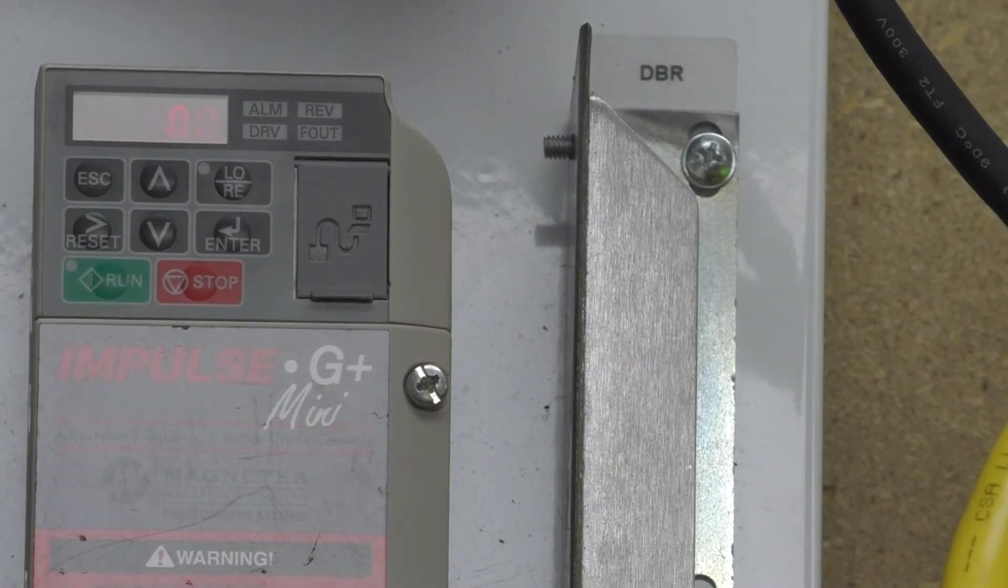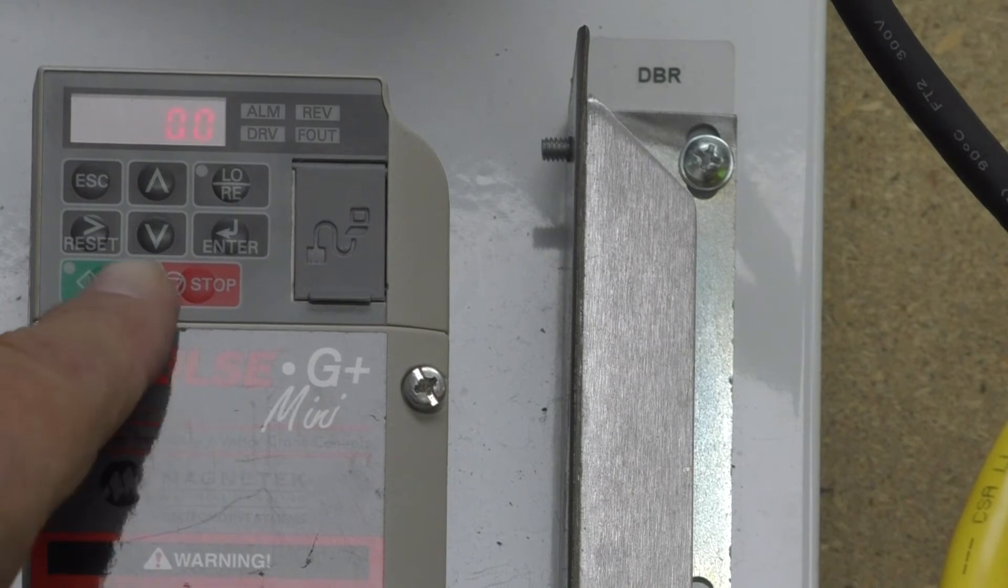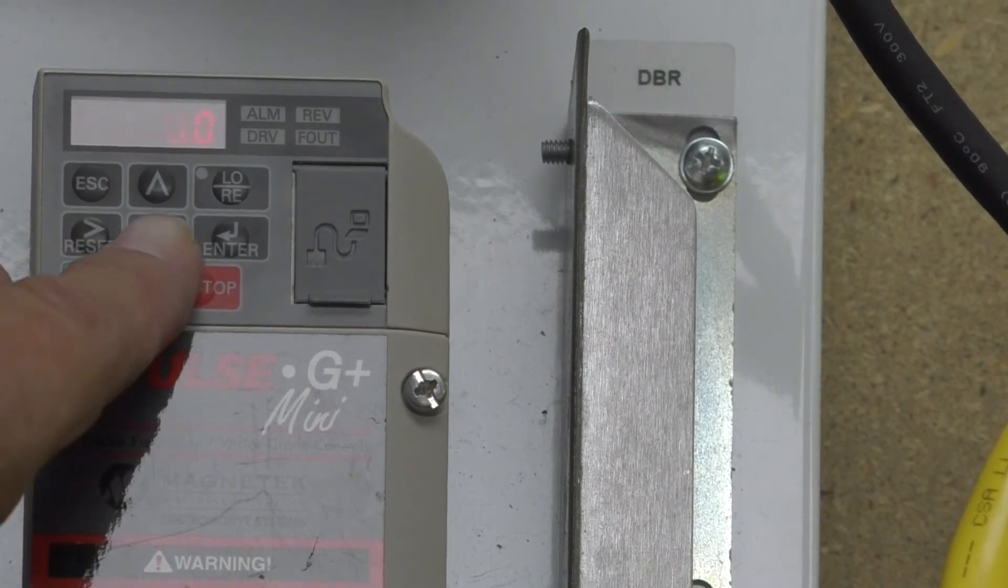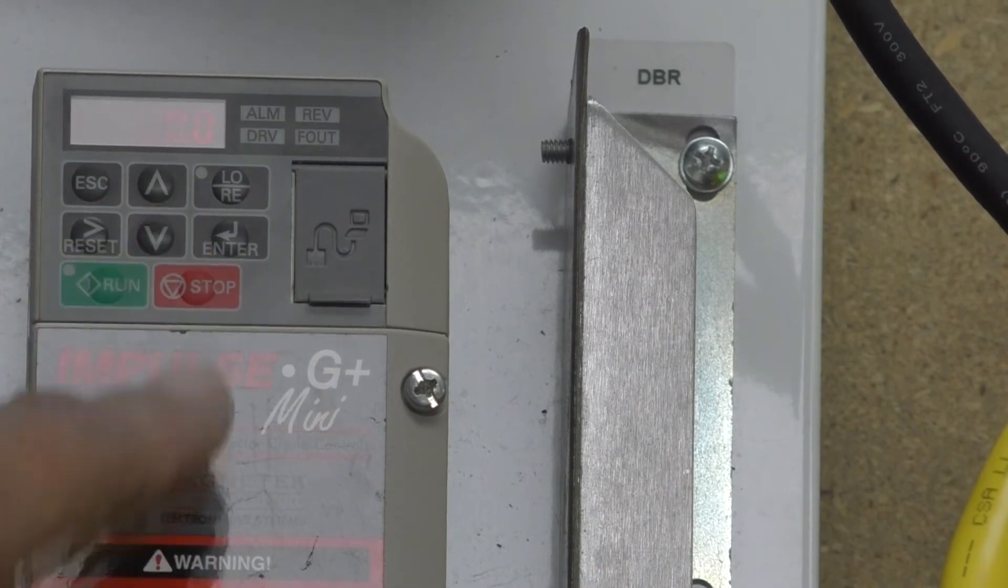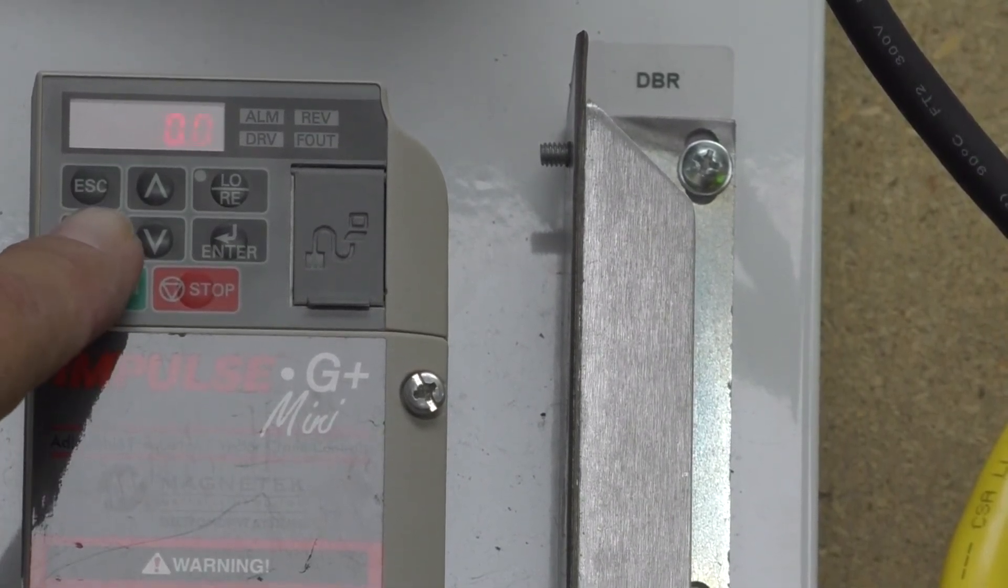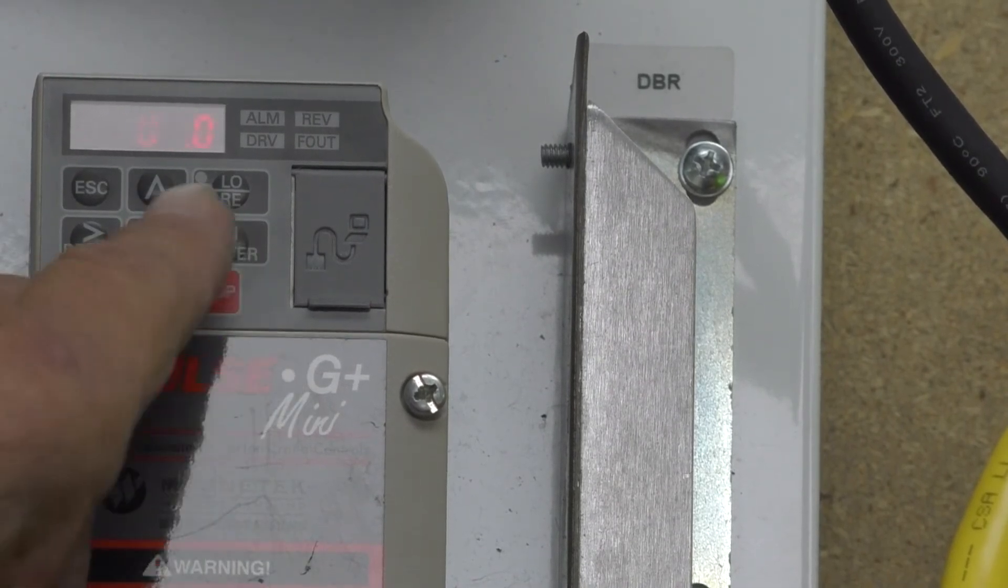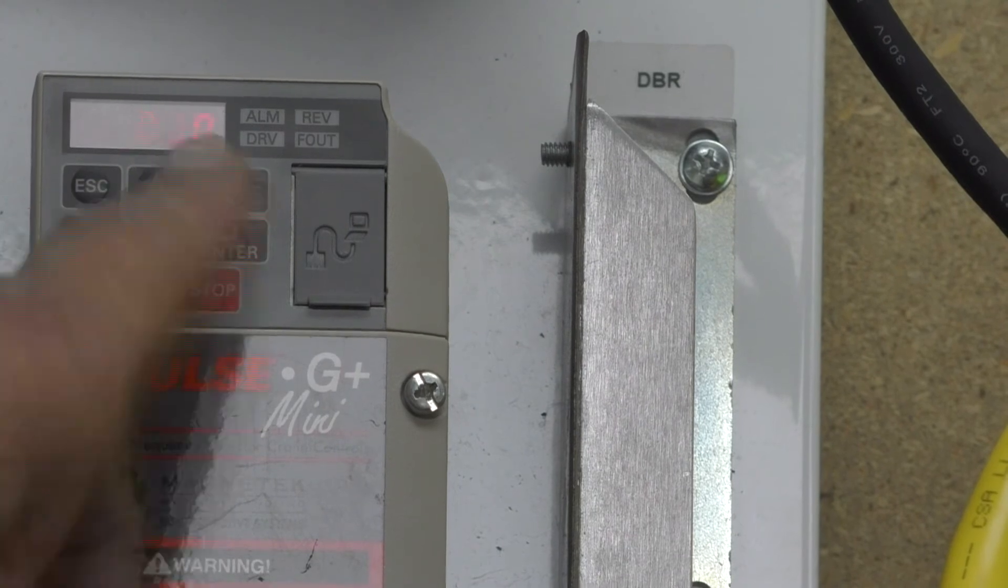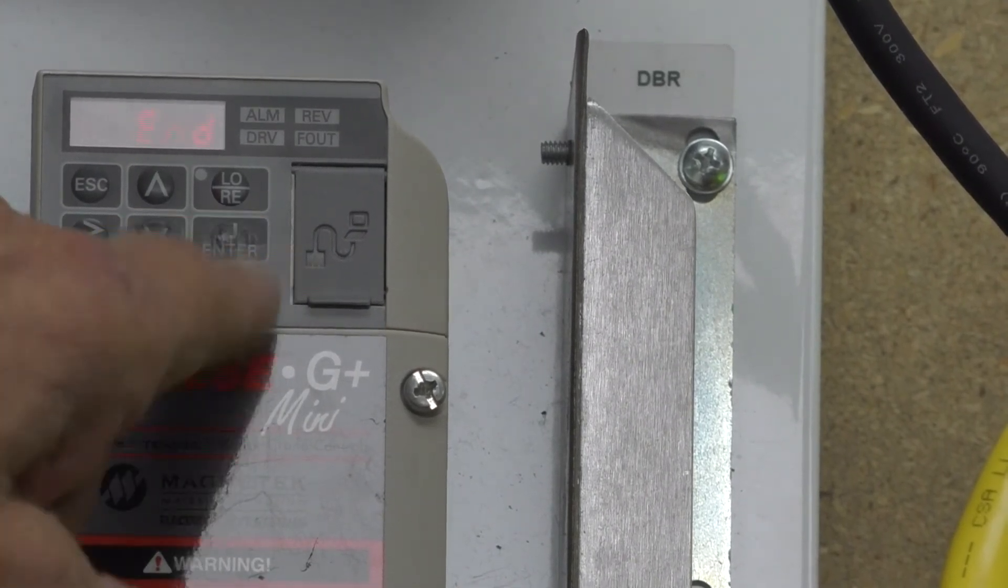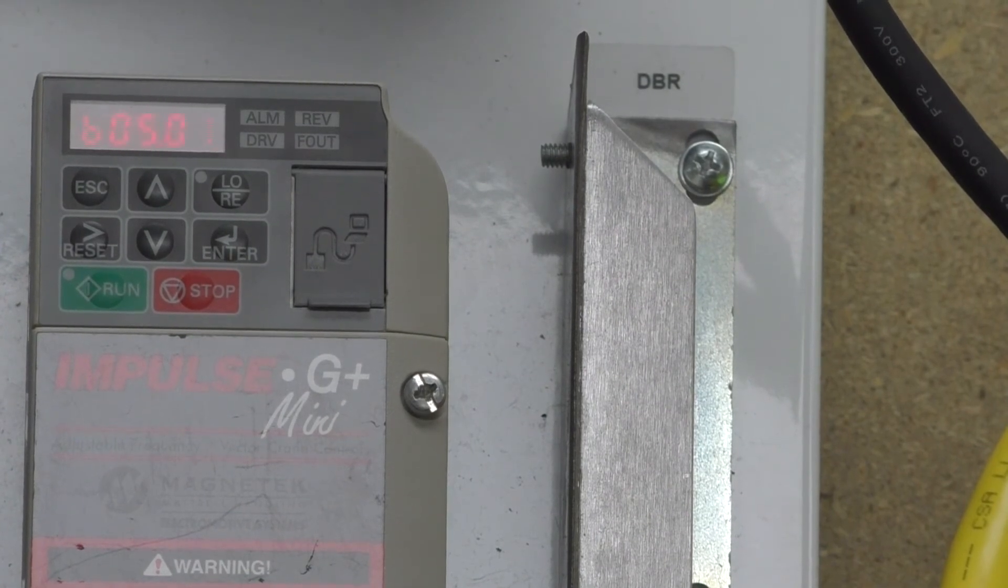I have 10 seconds. I want to decrease that to 3 seconds. What you want to do is hit your down arrow button once. Now I have 0, 0, 0. Move the cursor over one time. My middle 0 is flashing. I'm going to move that up to 3. Now I have 3 seconds. You hit enter. It's programmed for 3 seconds acceleration time.